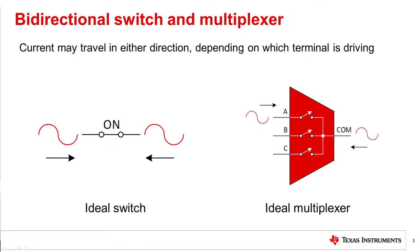Bidirectional means that the channel inputs of a switch or mux are interchangeable with the outputs. The signal may flow from either terminal to the opposite terminal when the switch is in the on state. An ideal switch in the on state acts as a low impedance wire and current may flow in either direction. The output and the input nodes are connected so that the input and output can be used interchangeably. Direction of current is entirely dependent on which side is driving.